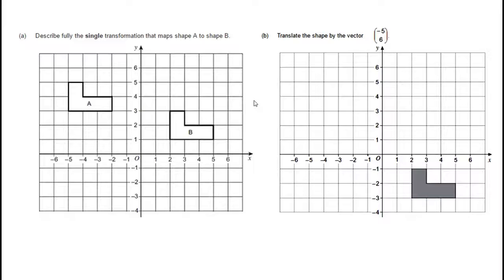So here we have a GCSE exam question on transformations. Part A gives us a diagram and says describe fully the single transformation that maps shape A onto shape B. Part B takes that same shape, positions it down here, and says translate that shape by the vector minus five, six.